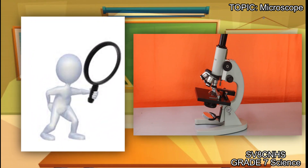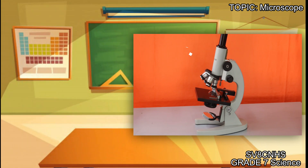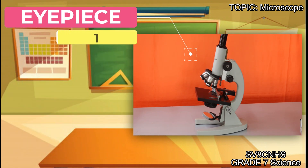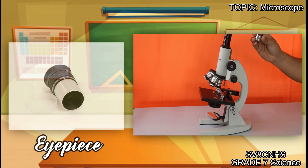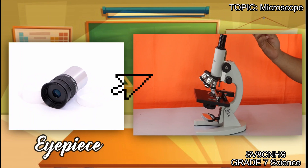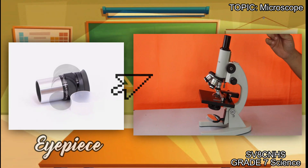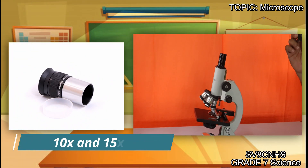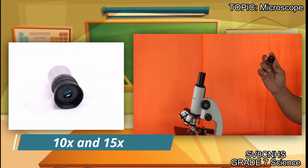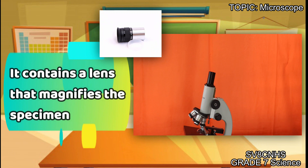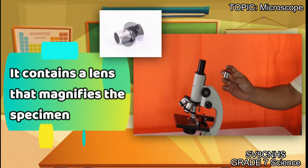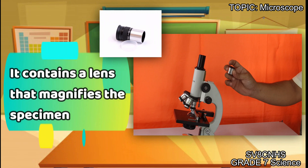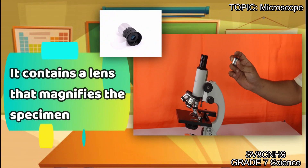Let's start with the magnifying parts. Our magnifying parts are composed of, number one, the eyepiece. Here is our eyepiece. Our eyepiece can magnify up to 10 times and 15 times. The function of the eyepiece is that it contains a lens that magnifies the specimen.